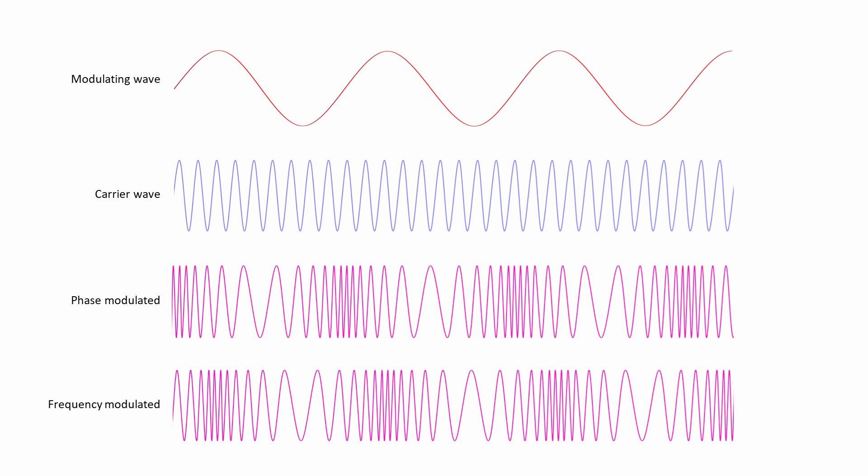Phase modulation, however, has the advantage of being easier to implement. The electronic circuitry required is simpler than that needed for frequency modulation. Furthermore, in practice, particularly with digital data, phase modulation uses a smaller bandwidth than frequency modulation, which means it can carry more information for a given frequency range.